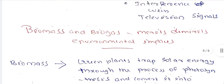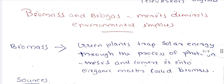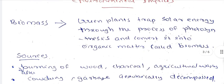Next: biomass and biogas, their merits, demerits, and environmental impacts. What is biomass? Green plants trap solar energy through the process of photosynthesis and convert it into organic matter called biomass.